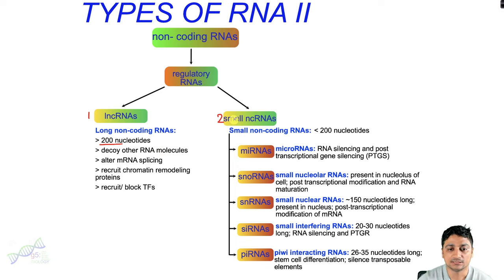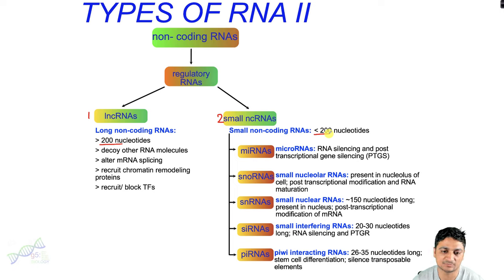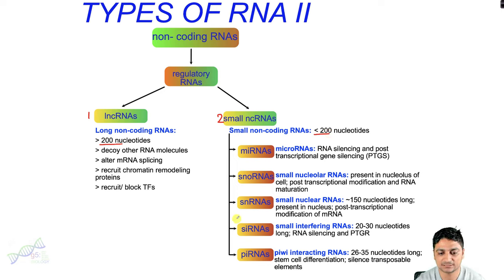Small non-coding RNAs are less than 200 nucleotides long. There are many different types of small non-coding RNAs. In this video we are going to focus on five different types: miRNAs, snoRNAs, snRNAs, siRNAs, and piRNAs.